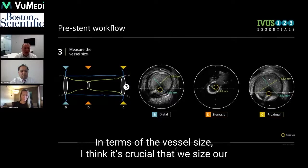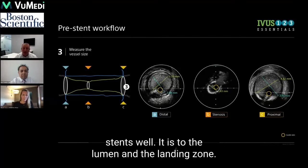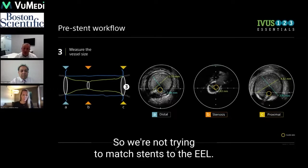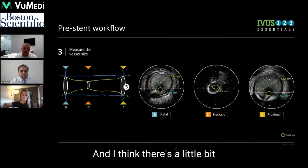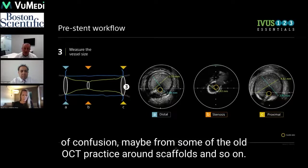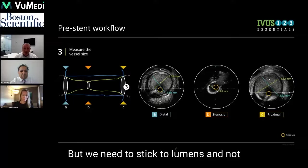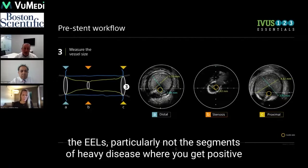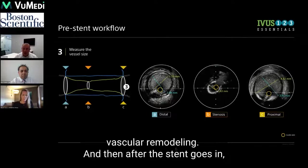In terms of vessel size, it's crucial that we size our stents well. It is to the lumen in the landing zone — we're not trying to match stents to the EEL. There's a little bit of confusion from some of the old OCT practice around scaffolds, but we need to stick to lumens and not to EELs, particularly not in segments of heavy disease where you get positive vascular remodelling.